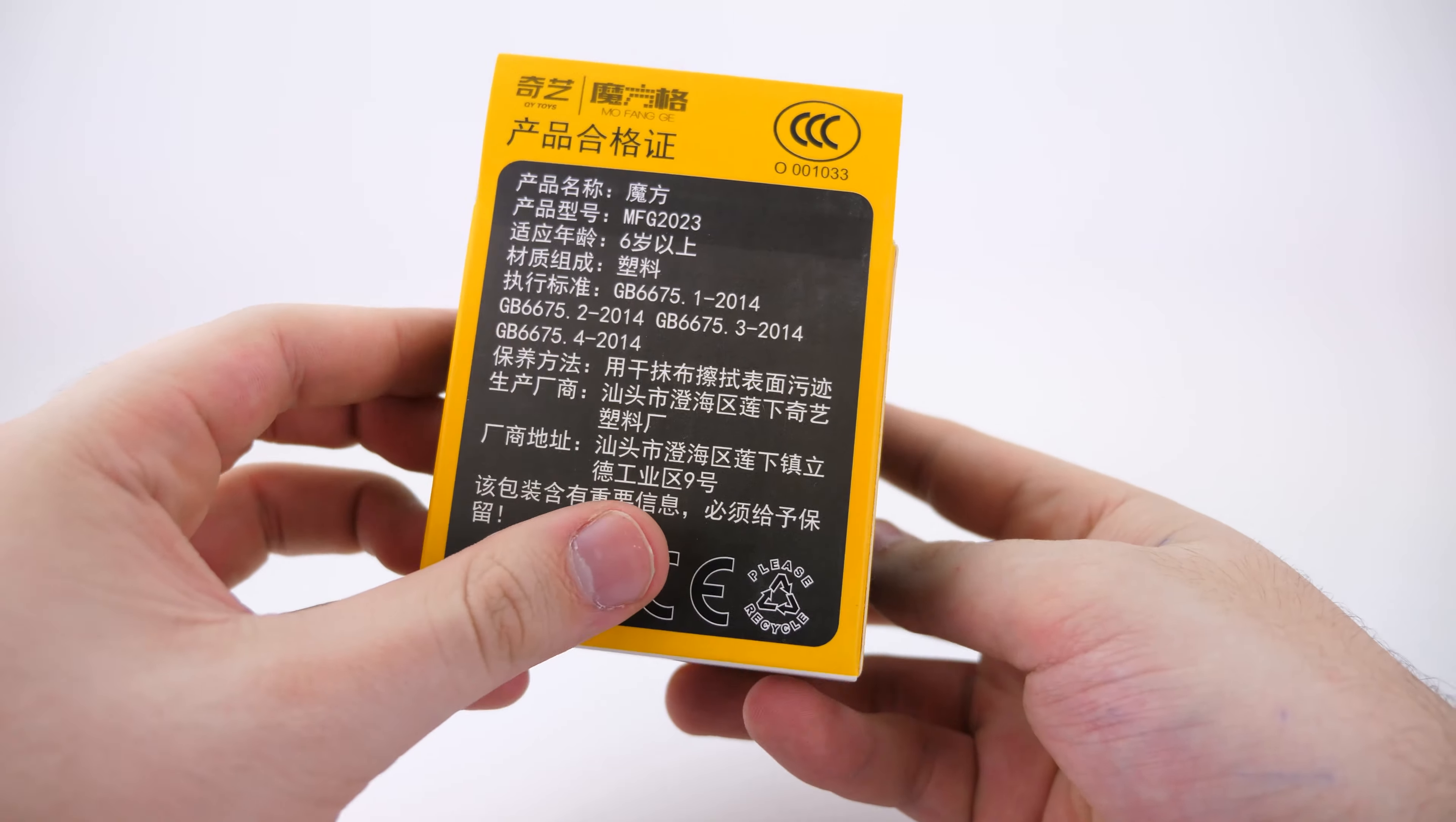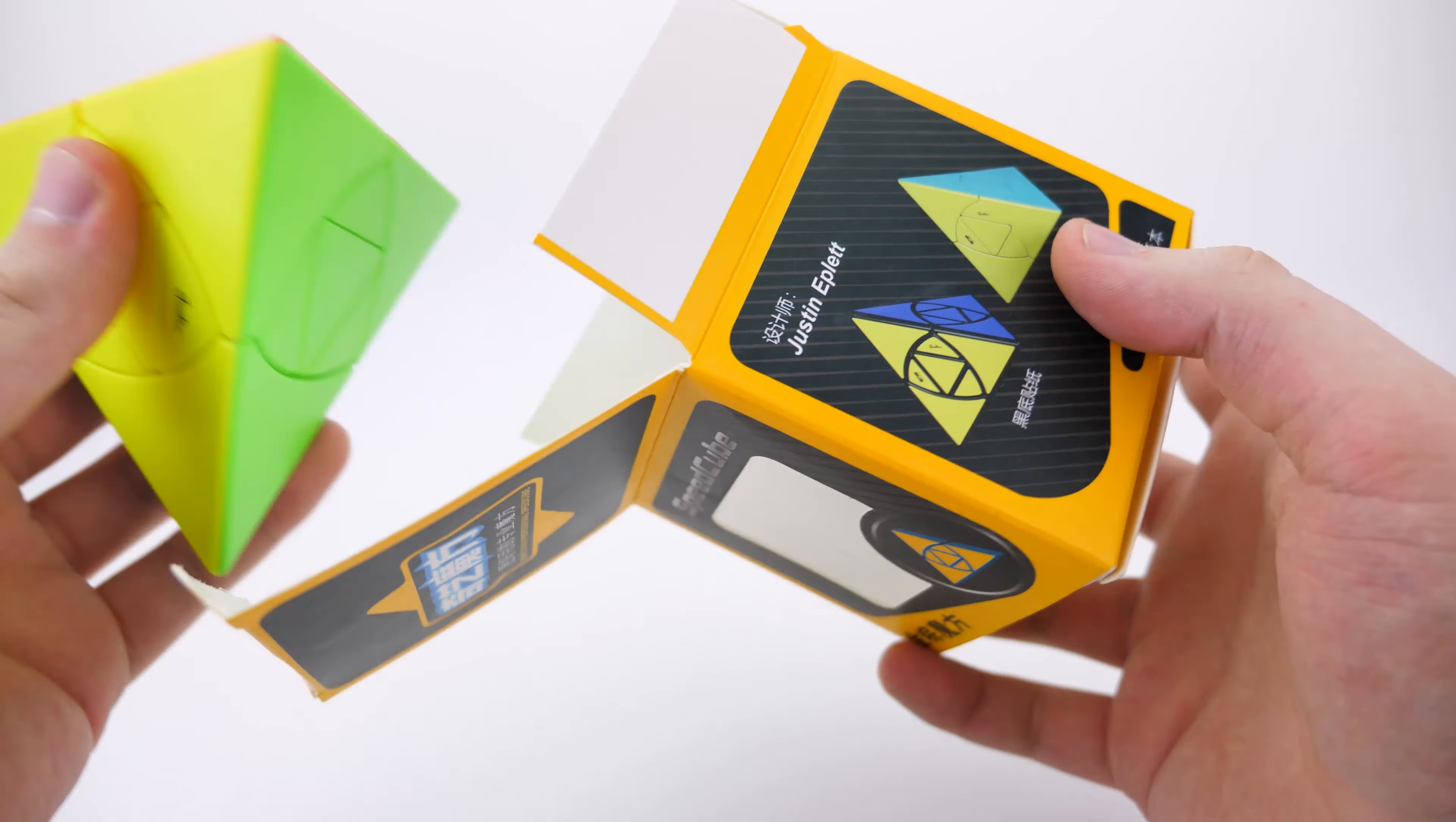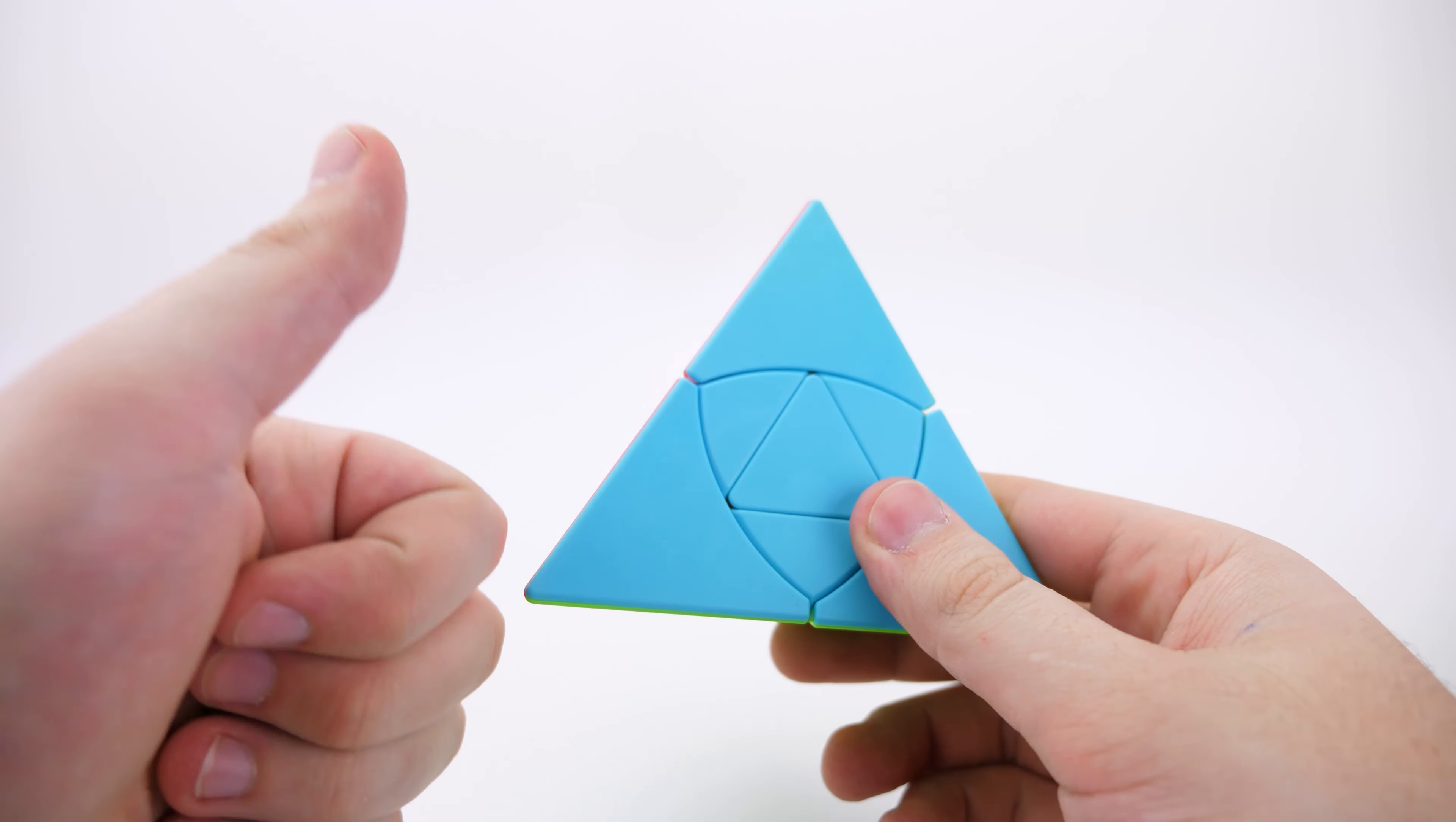Okay. So this is the box of the Jumo cube. Looks good. Now, I believe this is in collaboration with Justin Epplett. Sorry if I'm not pronouncing that correct. But Chi have said they're going to be doing more collaborations like that in future. So big thumbs up for Chi. Love to see them collaborating with modders.